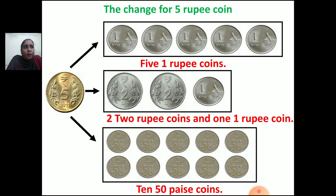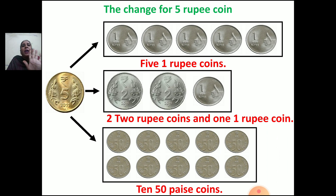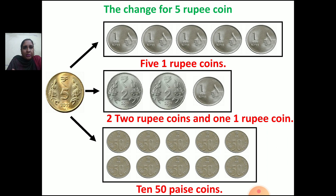Now we will see the change for 5 rupees. In the first box, 1 rupee coins are shown. Count: 1, 2, 3, 4, 5. So if you have 1 rupee coins, you will need 5 one-rupee coins to make 5 rupees.